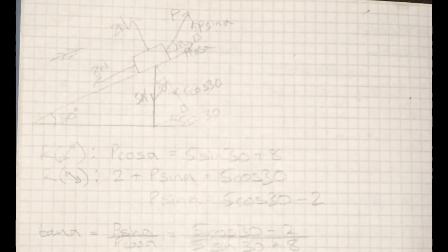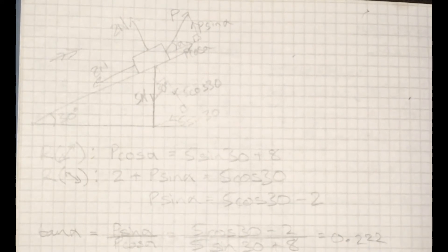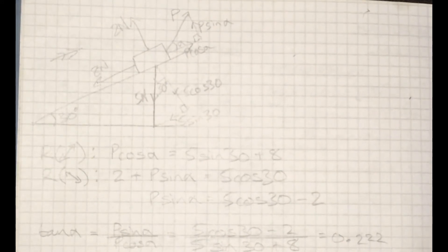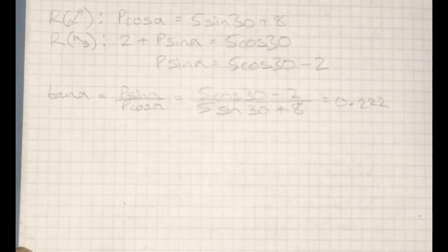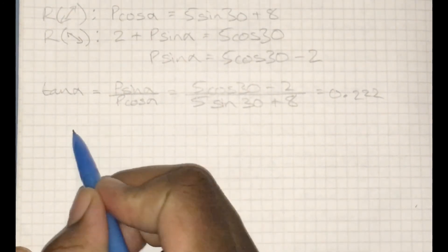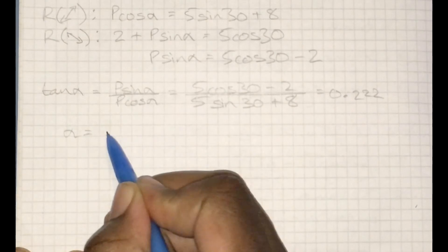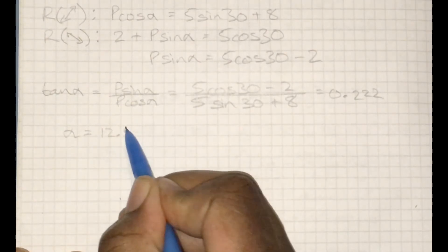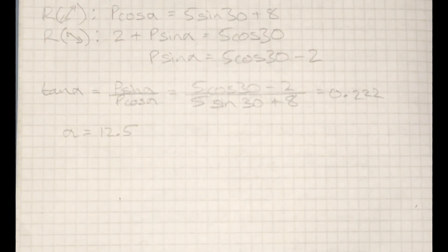In the calculator, this works out to be 0.222, three decimal places. All right, so from here we can find alpha. It's a quick inverse tan. As soon as we know alpha, we can actually substitute back and find the value for P.